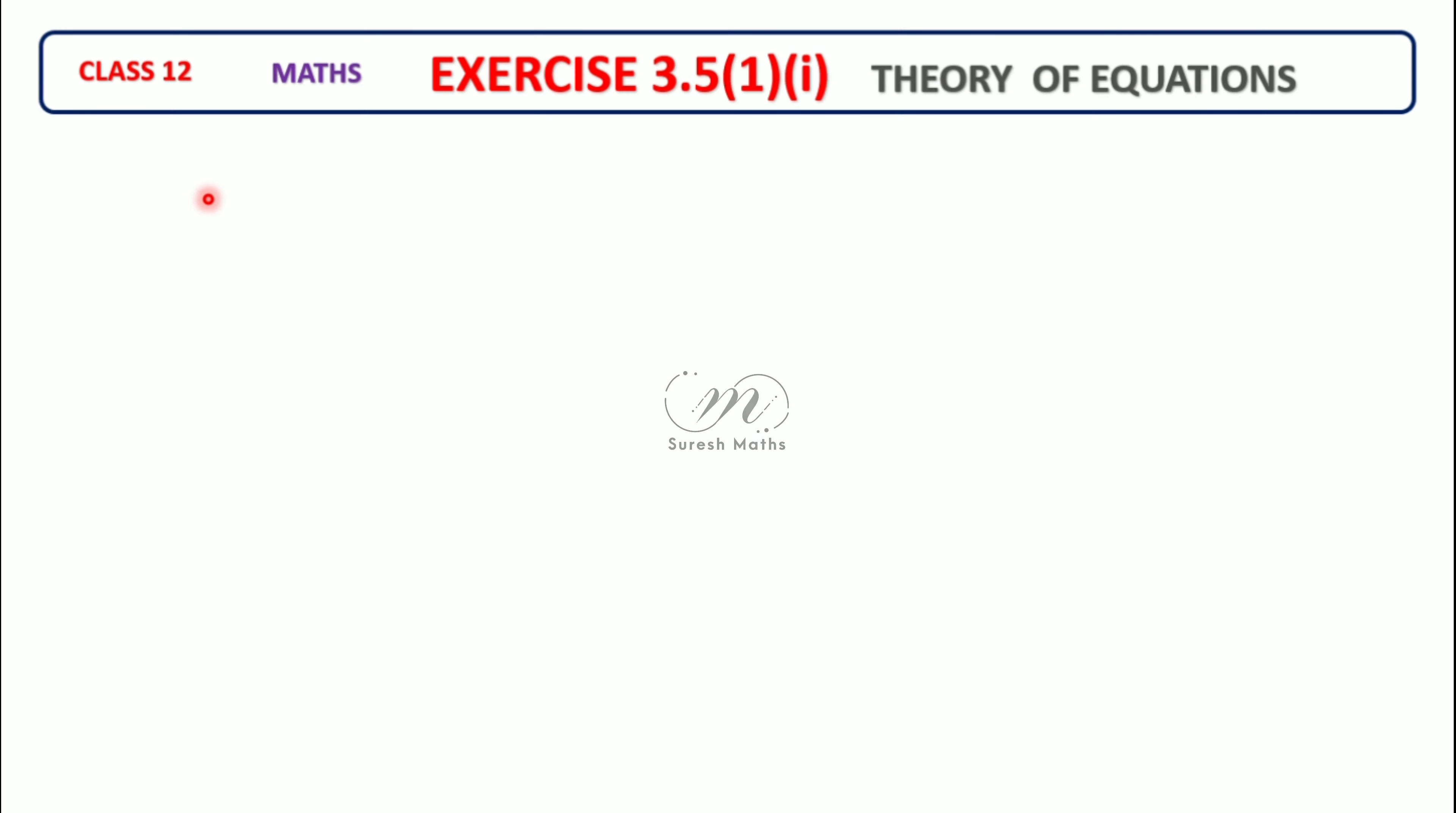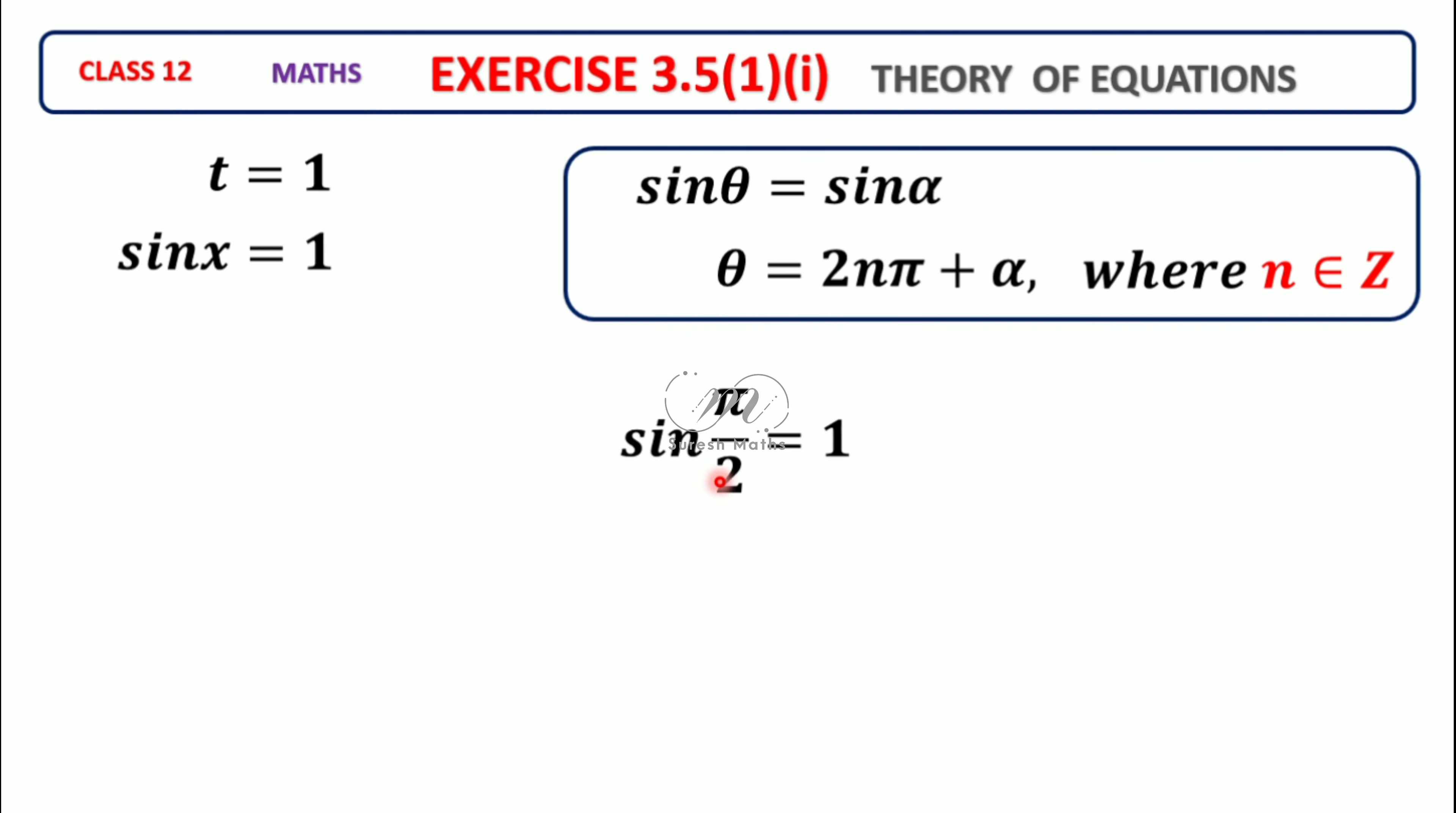Next, t = 1, which implies sinx = 1. Using the formula: if sinθ = sinα, then θ = 2nπ + α, where n belongs to Z. We know sin(π/2) = 1, so α = π/2.